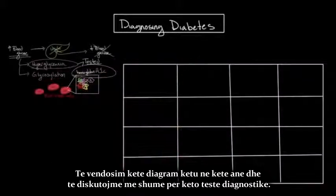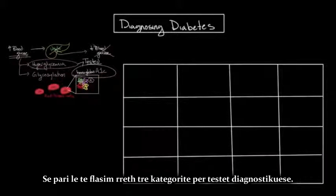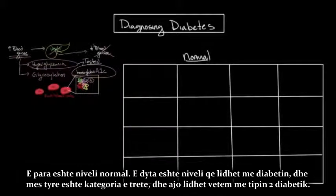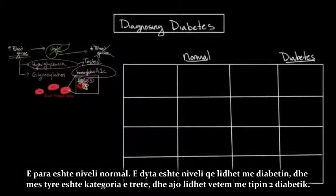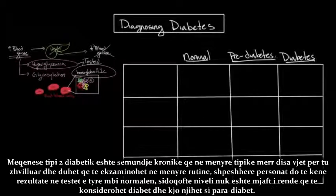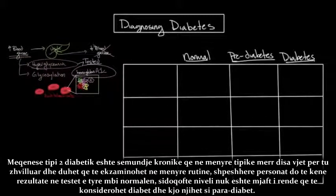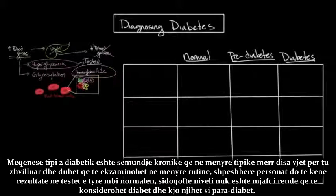There are three categories of results for the diagnostic tests. The first is a normal level, the second is a level associated with diabetes, and in between is a third category relating only to type 2 diabetes — prediabetes. Since type 2 diabetes typically takes many years to develop and is routinely screened for, individuals will often have a test result above normal but not severe enough to be considered diabetes. This is prediabetes.